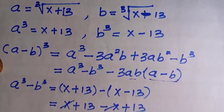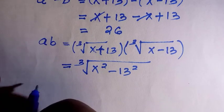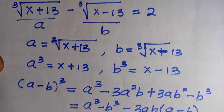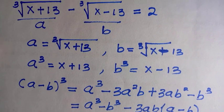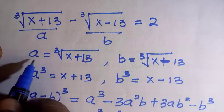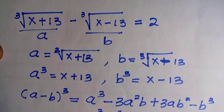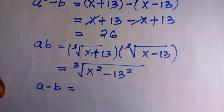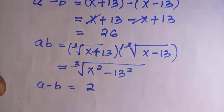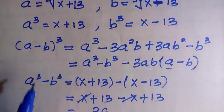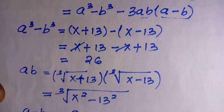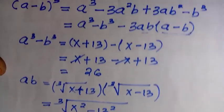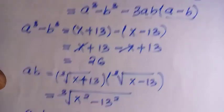We still need a minus b. Looking at our original definitions, since we let the first expression be a and the second be b, subtracting them gives a minus b equals 2. So the value of a minus b is 2.